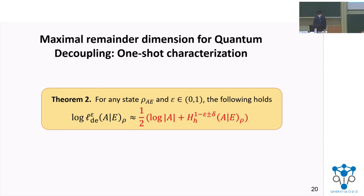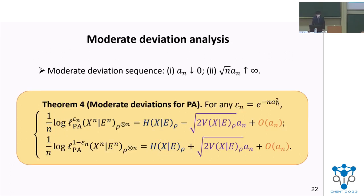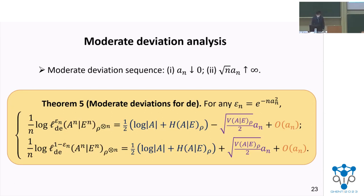For the maximal remainder dimension for quantum decoupling, we have the following one-shot characterization, shown in this theorem. In the i.i.d. scenario, our one-shot bounds lead to the matched second-order rate on both privacy amplification and quantum decoupling. For the moderate deviation region, our result also applies to moderate deviation analysis. For any error that vanishes moderately quickly as n grows large, the rate of the moderate deviation for privacy amplification and quantum decoupling are shown in the corresponding theorems.